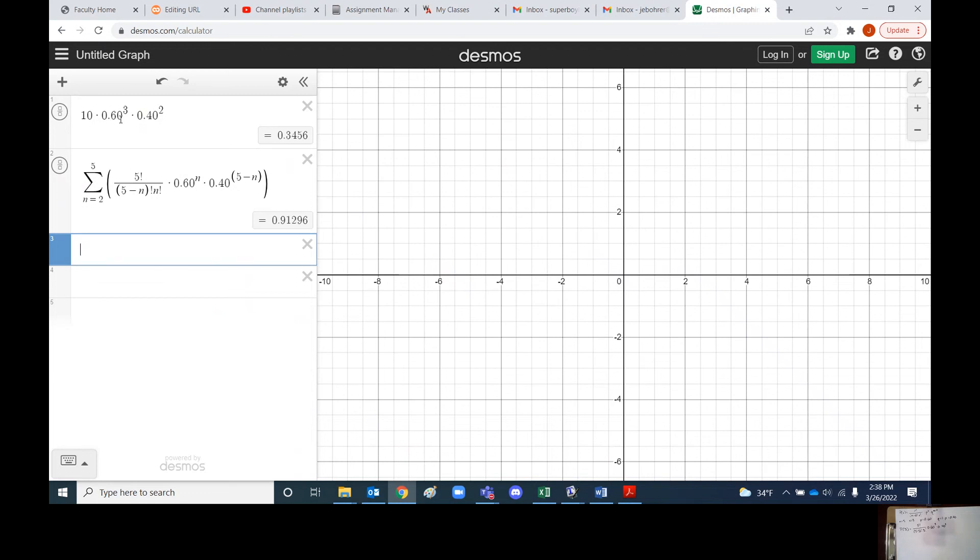And that gives us a value of 0.91296. So the probability that at least two people believe in the devil is better than 0.9.